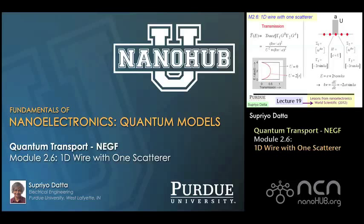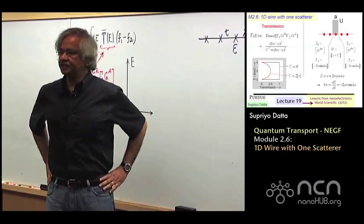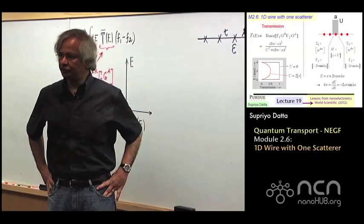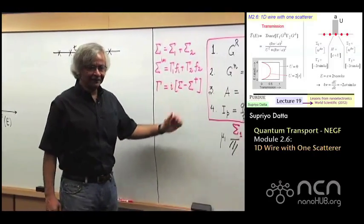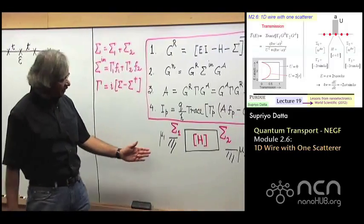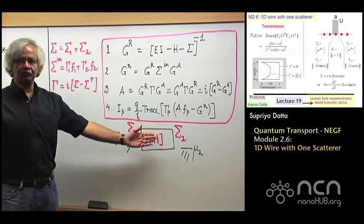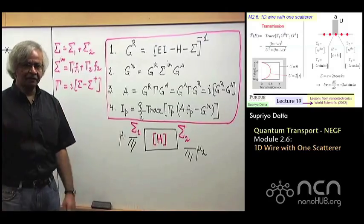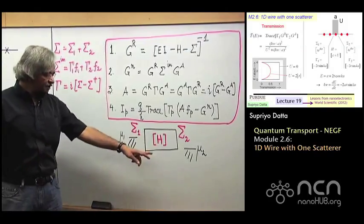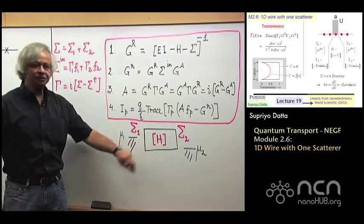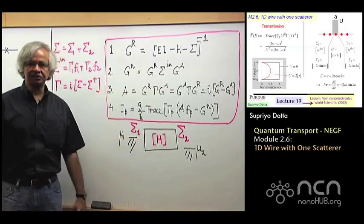Welcome to module 2.6 — the last module for this week on Nanohub U online instruction. Just to remind you what we did: what you're interested in is describing current flow through small devices using atomistic models for current flow. The first step is writing down the H matrix, the Hamiltonian matrix, which describes the channel.